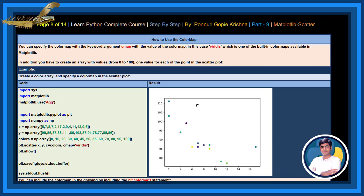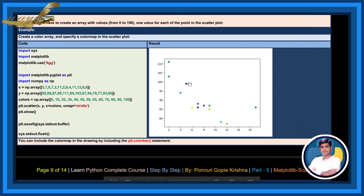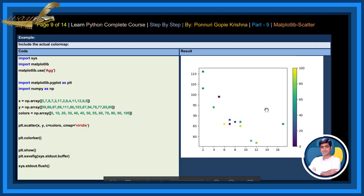Create a color array and specify color map in the scatter plot. You can include the color map in the drawing by including the plt.colorbar statement. See here. Also here, we had used colorbar. See here, color map and color bar.